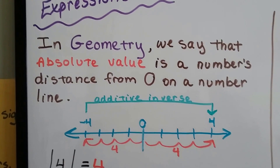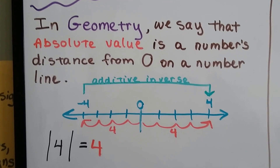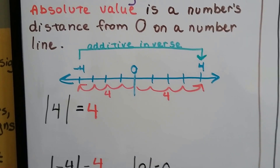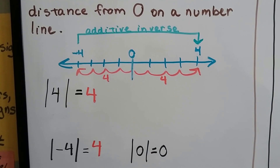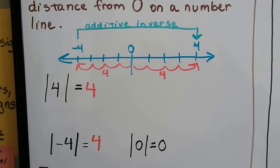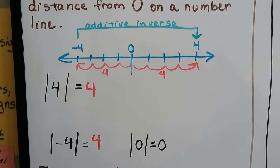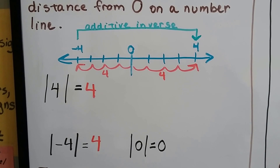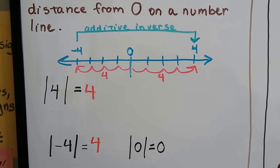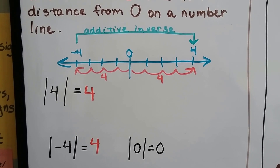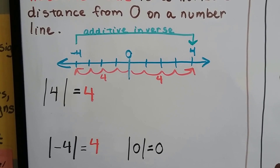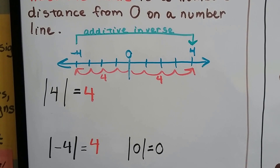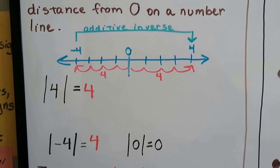In geometry, the absolute value is a number's distance from 0 on a number line. The absolute value of 4 is 4. The absolute value of negative 4 is 4, because it's 4 hops away from 0 on a number line. The absolute value of 0 is 0 — it's 0 hops away from 0.